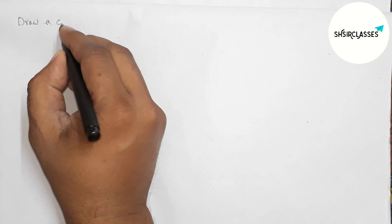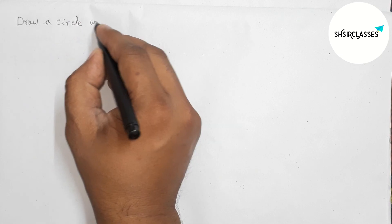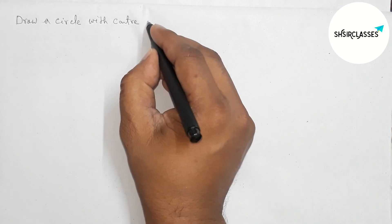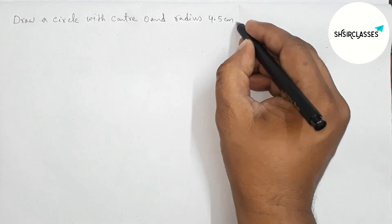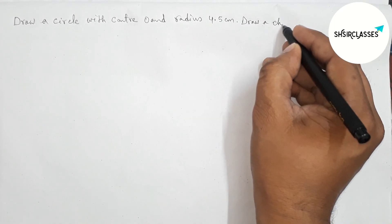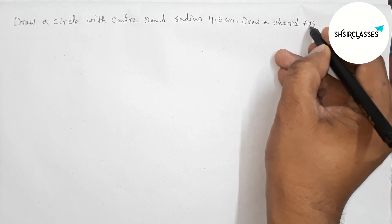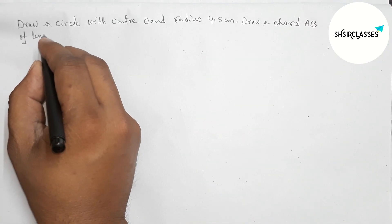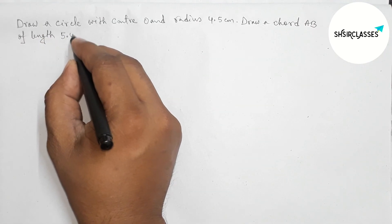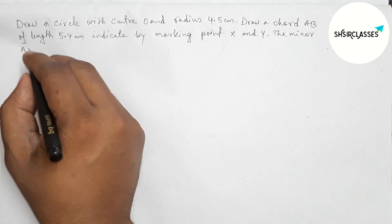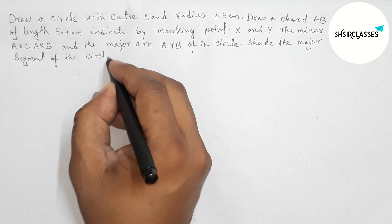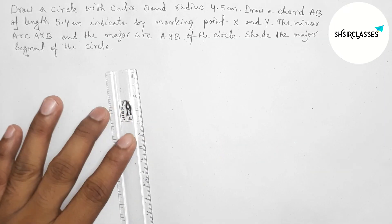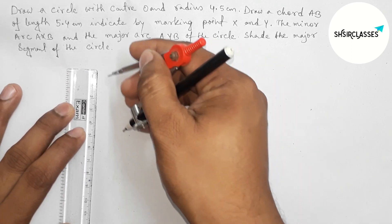Hi everyone, welcome to SI Share Classes. Today in this video I am going to draw a circle with radius 4.5 centimeters and center O, draw a chord AB of length 5.4 centimeters, then mark the minor arc, major arc, and the major segment of the circle. So let's start the video.